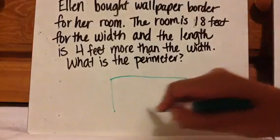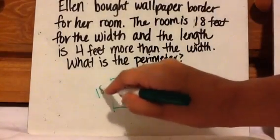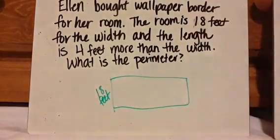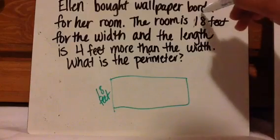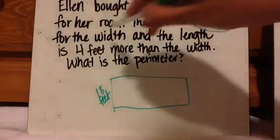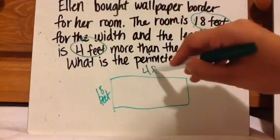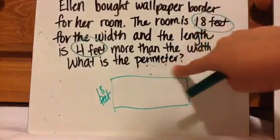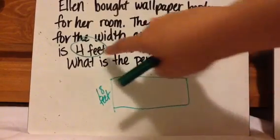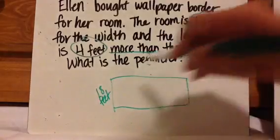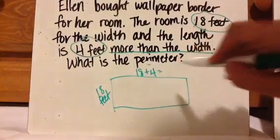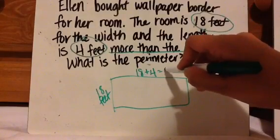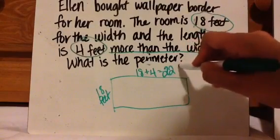So here's the room. The width is 18 feet. Width is always considered the smaller side. And then it says the length is 4 feet more than the width. Now sometimes students will just see 18 feet and 4 feet and then just put that. But if you look carefully at the question, it says 4 feet more than the width. So if the width is 18, the length is 4 feet more, which means you need to add 4. So the length is actually 22 feet.